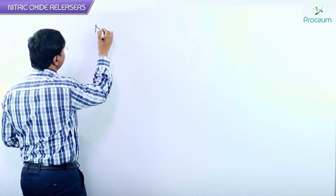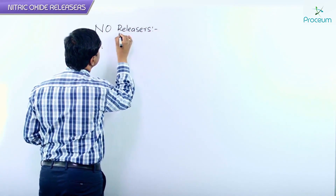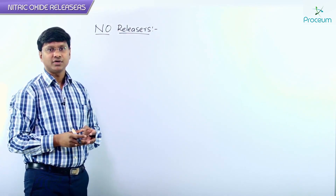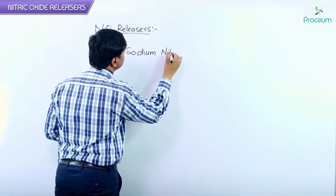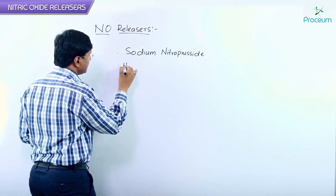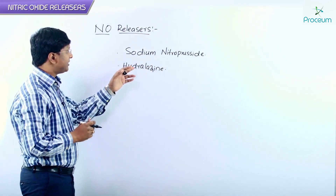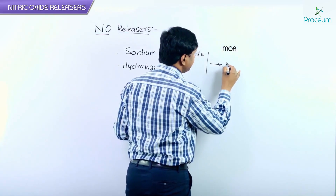Let me discuss another group of drugs used in the treatment of hypertension by causing vasodilatation — that is nitric oxide releasers. The drugs in this group include sodium nitroprusside and hydralazine. These drugs will act by releasing nitric oxide.